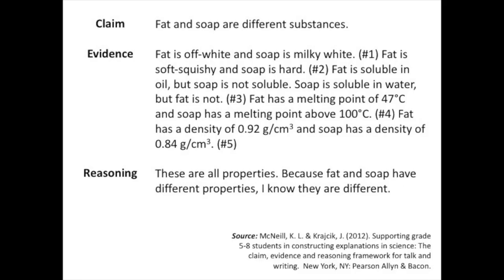This example, taken from the book on CER, has students comparing fat and soap via five different physical and chemical properties. Students list all their data as part of their evidence, and they list their reasoning with a conclusion that, because fat and soap have different properties, they are different. While nothing is incorrect about this argument, we want to show you how things are furthered by the addition of a justification.